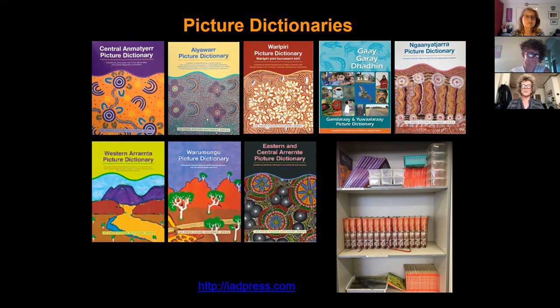Picture dictionaries use line drawings, which is what this project is about. And these line drawings have some advantages over photos. They are generally cheap to reproduce. They can focus on particular details of their reference, and for human subjects, they have a degree of anonymity, which is a really important thing in some contexts.